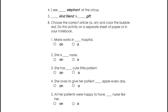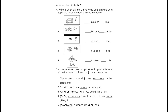Next, Independent Activity 2. Write A or AN on the blanks. Write your answer here in the module. Number 1: Blank bus and blank kite. Number 2: Blank fish and blank starfish. Number 3: Blank eye and blank hand. Number 4: Blank hive and blank bee. And Number 5: Blank man and blank violin.